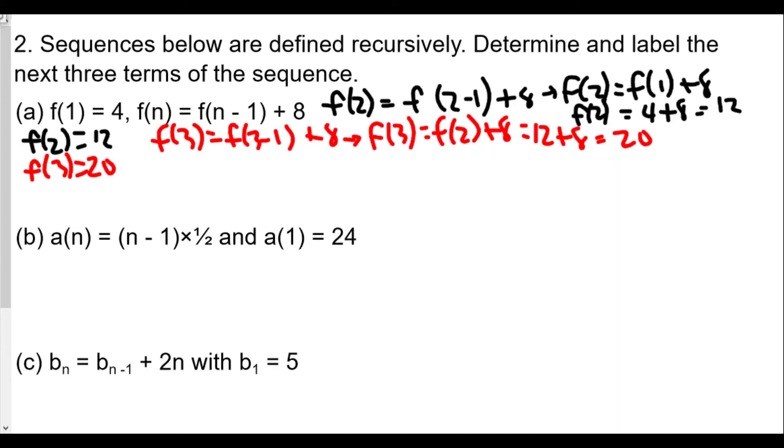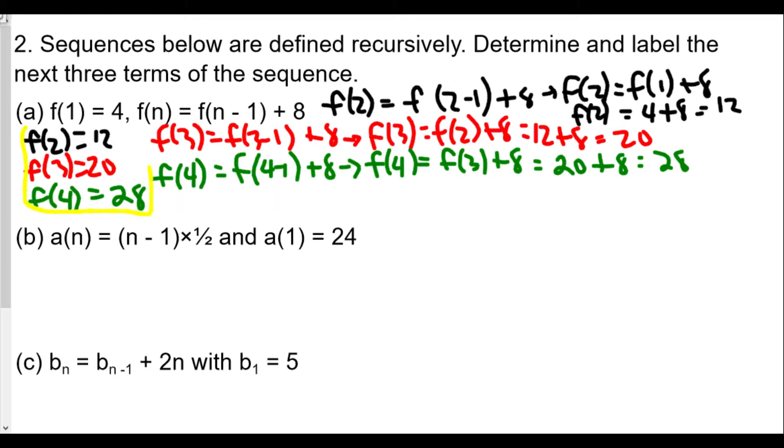So our third term is F3, 20. Now we want to find the next one. And again, we're following the formula. The fourth term is equal to F(4-1) plus 8, which means F4, the fourth term, is equal to F3, the third term, plus 8. F3 we found to be 20, so we add 20 plus 8 to give us 28. And so the fourth term is equal to 28. And these are the next three terms in the recursively defined sequence.